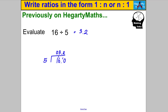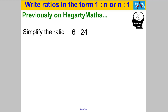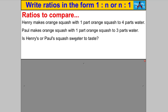Next, simplify the ratio 6:24. The highest common factor of 6 and 24 is 6, so divide both sides by 6 to get 1 to 4. Now let's move on to an introduction to what we're doing in this video.